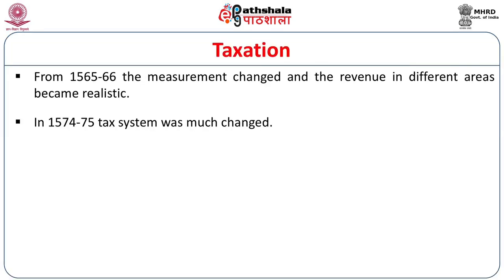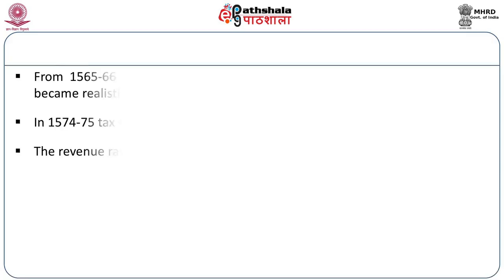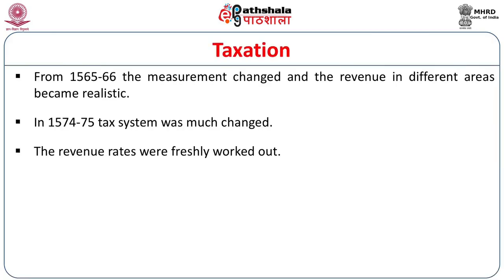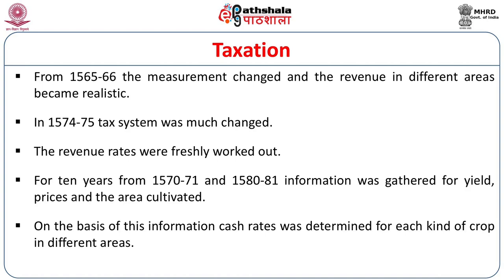In 1574–75, the tax system was again much changed, based on the count started in 1565–66. Revenue rates were freshly worked out. For ten years from 1570–71 to 1581, information was gathered on yield, prices, and the area cultivated. On the basis of this information, cash rates were determined for each kind of crop in different places.